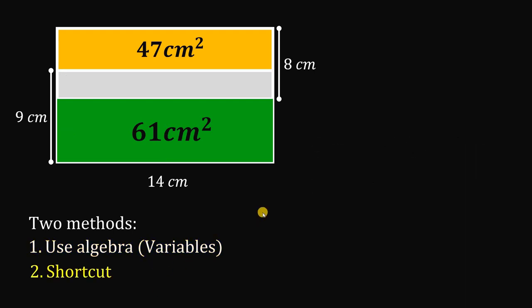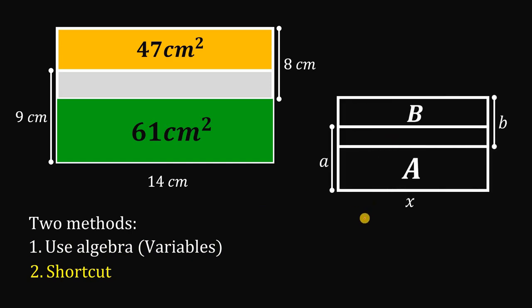Now, using the shortcut, given this figure, the length of this rectangle must be equal. By the way, this A is the area and this B is also the area. Small a and small b are the side length. The length of the side of this rectangle represented as x must be equal to capital A minus capital B all over small a minus small b.